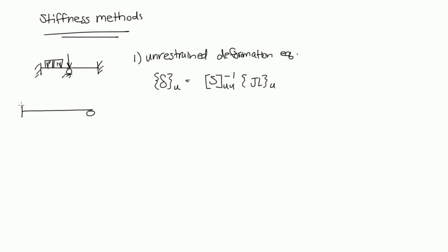Let's say we have a beam with a fixed end here and a roller here. Notice that this has six degrees of freedom: rotational, rotational, vertical, vertical, horizontal, horizontal.